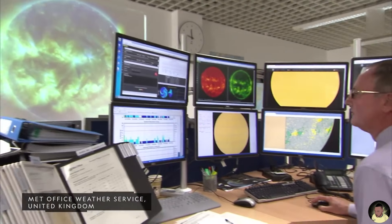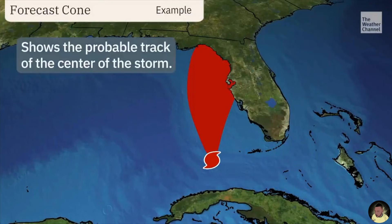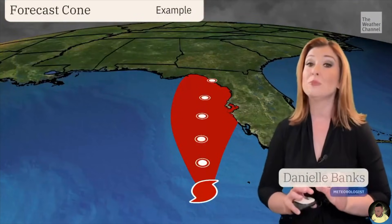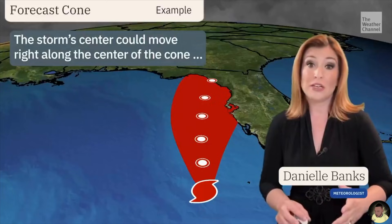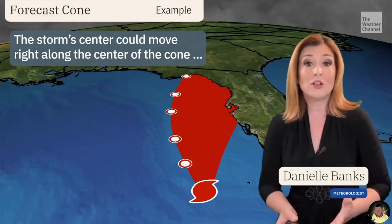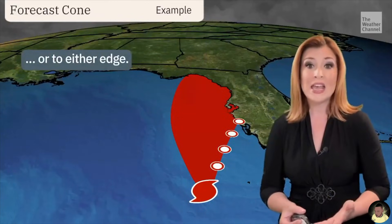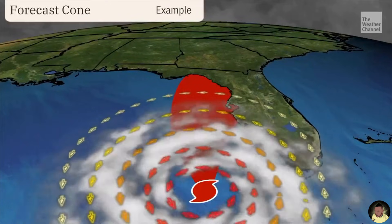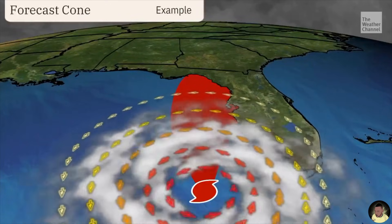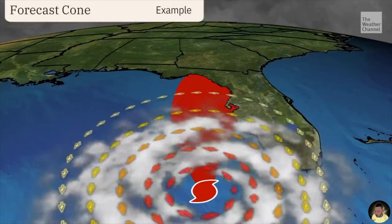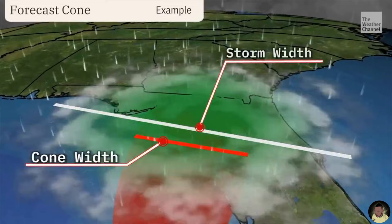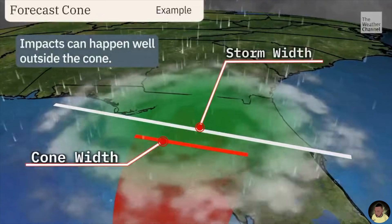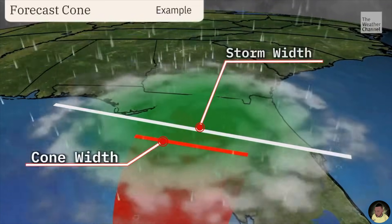These systems are tracked using the cone of uncertainty, which represents the probable track of the center of a tropical cyclone — not the definite track, but the probable track. The storm center could move along the middle of the cone or go to either edge. When the cone gets wider, it indicates more uncertainty the further out into the future we look, not necessarily that the storm is growing bigger. The track of the storm and the size of the storm should be considered separately, since with large storms, impacts can extend far beyond the cone.